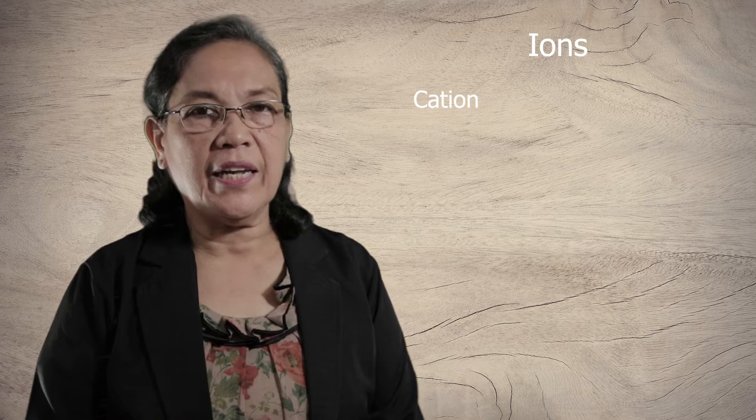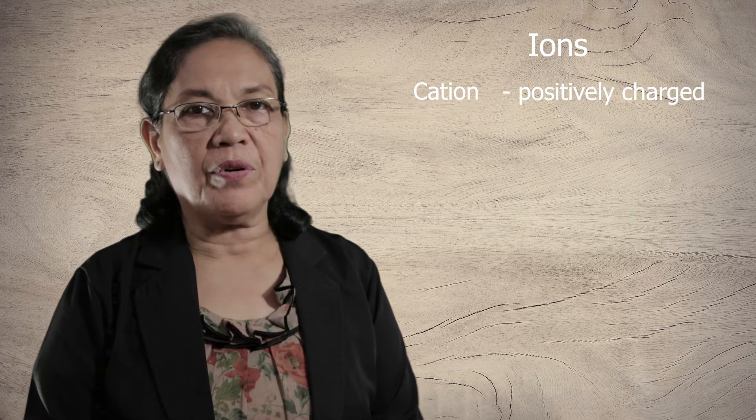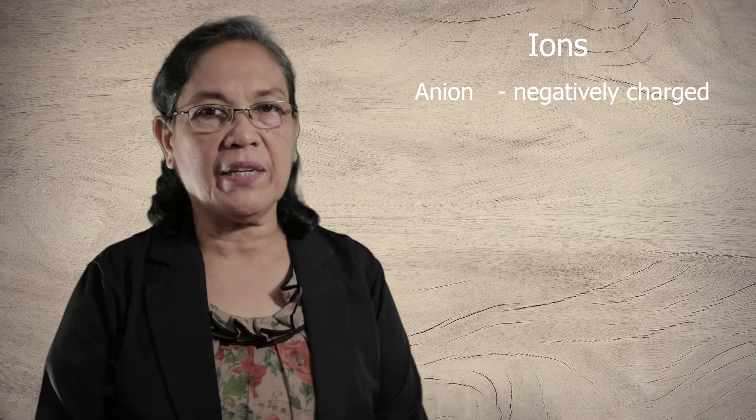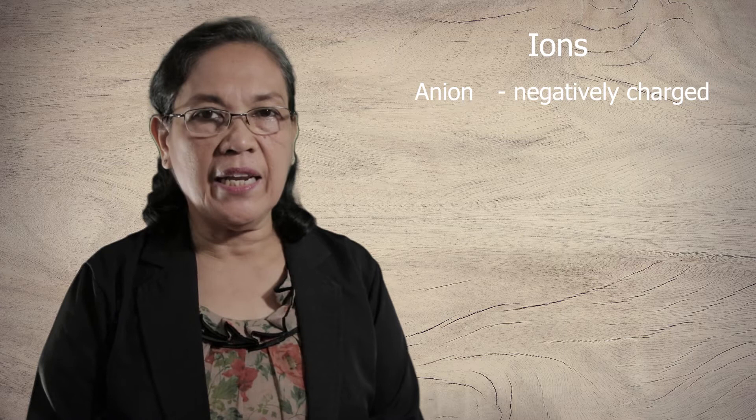The cation is a positively charged particle. This is formed when an atom loses an electron. While an anion is a negatively charged particle, this is formed when an atom gains an electron or electrons.